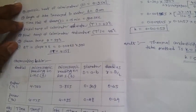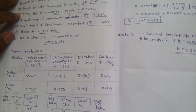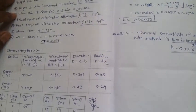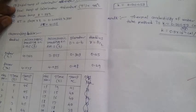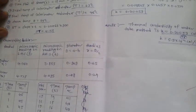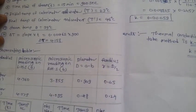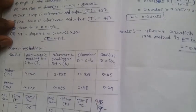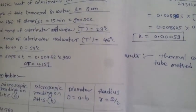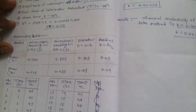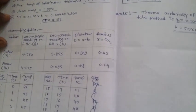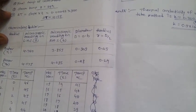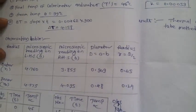The time of flow of steam is 15 minutes, that means 900 seconds. The initial temperature of water and the calorimeter, capital T, is equal to 23 degrees Celsius. After passing steam through the tube, the final temperature T dash is equal to 46 degrees Celsius. The steam temperature theta is equal to 99 degrees Celsius. Then we calculate delta T from the slope of the graph into T, where T is the time of steam flow, which is 900 seconds.